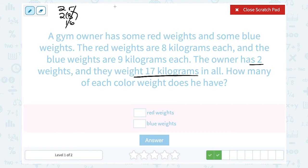If he had two blue, that's not going to quite work out either, because the blue weights are nine kilograms. Two times nine would give us 18. So it must be one of each. Let's try it out. If he has one red and one blue, one red would weigh eight kilograms and the one blue weight would weigh nine kilograms. You can see that's going to work out. Eight plus nine is going to give us 17 kilograms. So that must be the answer, one of each weight.